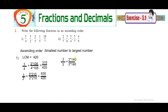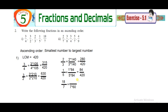Similarly, for 1/5: find how many times 5 goes into 420 — that is 84 times. So 1 × 84 = 84/420. For 18/7: find how many times 7 goes into 420 — that is 60 times. Multiply 18 × 60 to get 1080/420.